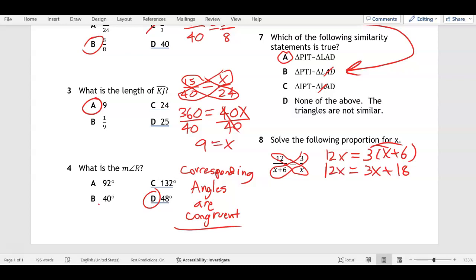X cannot be on both sides, so we get rid of the smaller X. Minus 3X minus 3X. 12 minus 3 is 9X equals 18. Last step, to get rid of that 9 we divide and we get X equals 2. So that is your quiz review. Your quiz is very similar to that, so make sure you are ready and study for it.